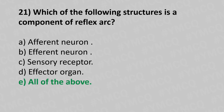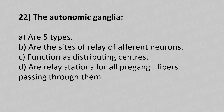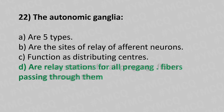Question 22: The autonomic ganglia — Option A: are five types. Option B: are sites of relay of the afferent neuron. Option C: function as descending centers. Option D: are relay stations of the preganglionic fibers passing through them. The answer is Option D — they are the relay stations of preganglionic fibers passing through them.